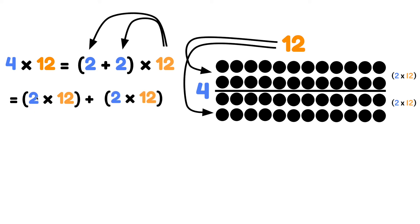We know our doubles. We know 2 times 12 is 24, which means that 2 times 12 is 24 again. We can add 24 plus 24 and that equals 48. So 4 times 12 equals 48. The product is 48.